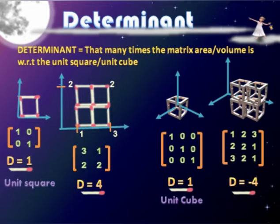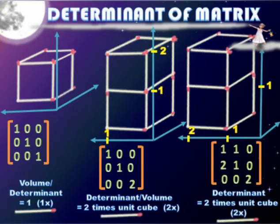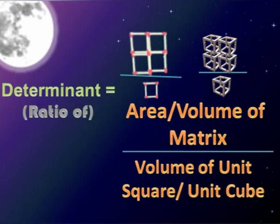The determinant of the matrix that you are considering is a relative volume or relative surface area. One way to look at the determinant, the way I look at it, is how many times the matrix that you are dealing with, or the object that it is representing, its volume or surface area is. That is, how many times it is that of a unit cube or a unit square.